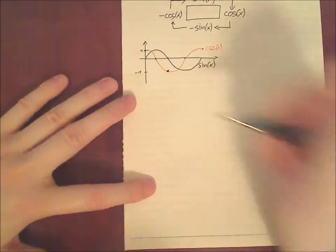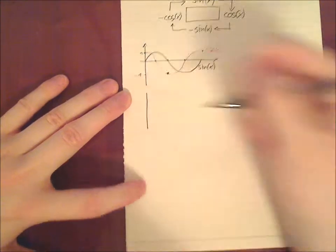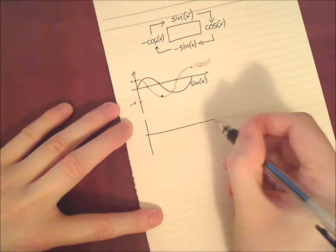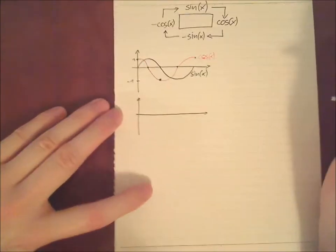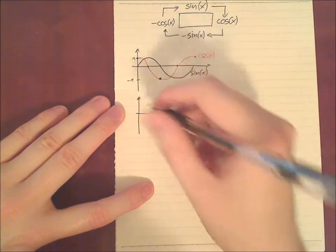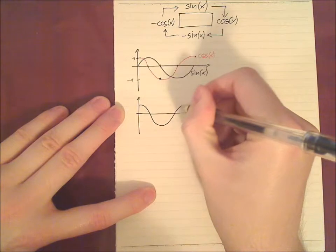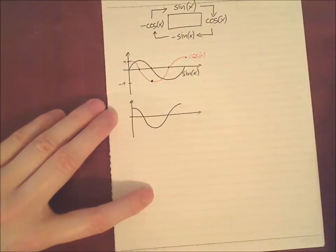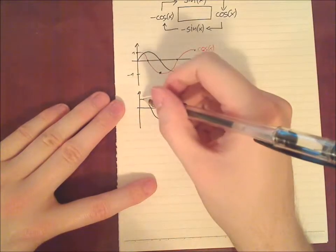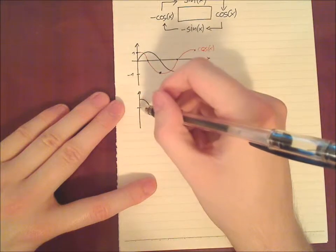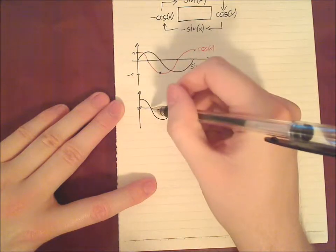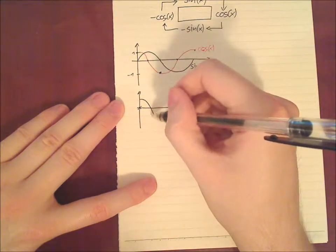And here we said this is cosine. And the same again, we can do with the cosine. Cosine looks like we just drew it. Almost. And again, we can say we have here, we have zero,